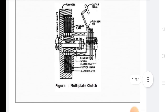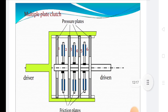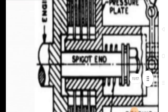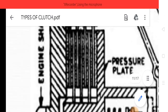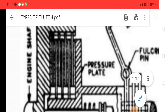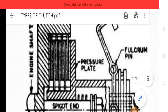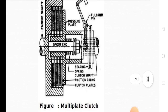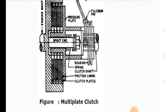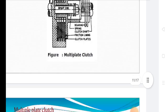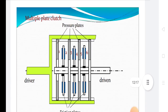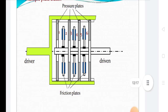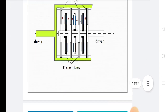This is the diagram of the multiple plate clutch. In this diagram all points are shown: engine shaft, pressure plate, fulcrum pin, bearing, spring, clutch shaft, friction lining, and clutch plate. This is the multiple plate clutch showing the driver and driven sides, with pressure plates numbered 1 through 6 and the friction plates.